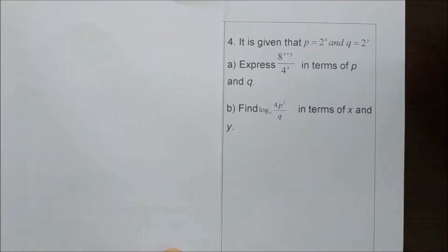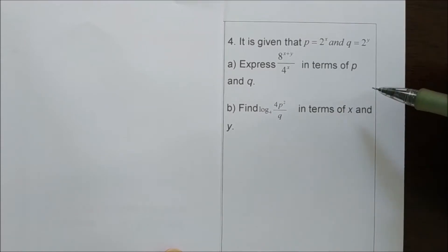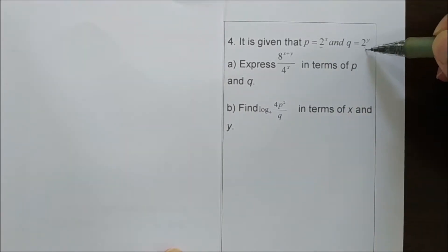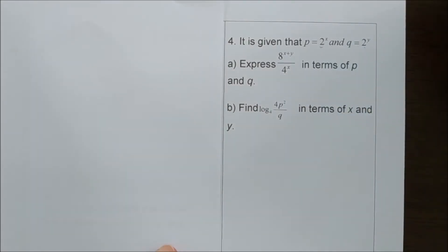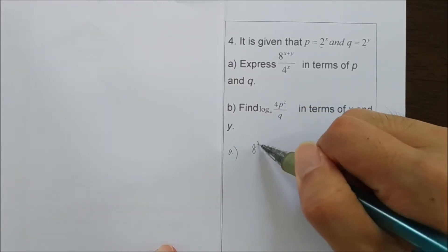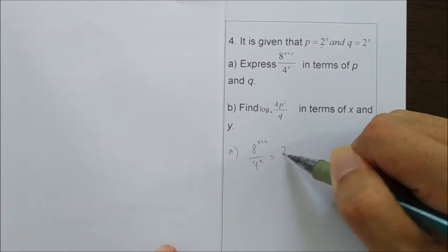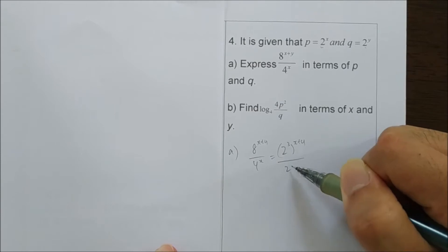It is given that p equals 2 to the power of x and q equals 2 to the power of y. Express this in terms of p and q. Given the value of 2 here, we know that we need to change the 8 and the 4 to the base number 2. So question A, this is actually equals to 2 to the power of 3 and 2 to the power of 2.